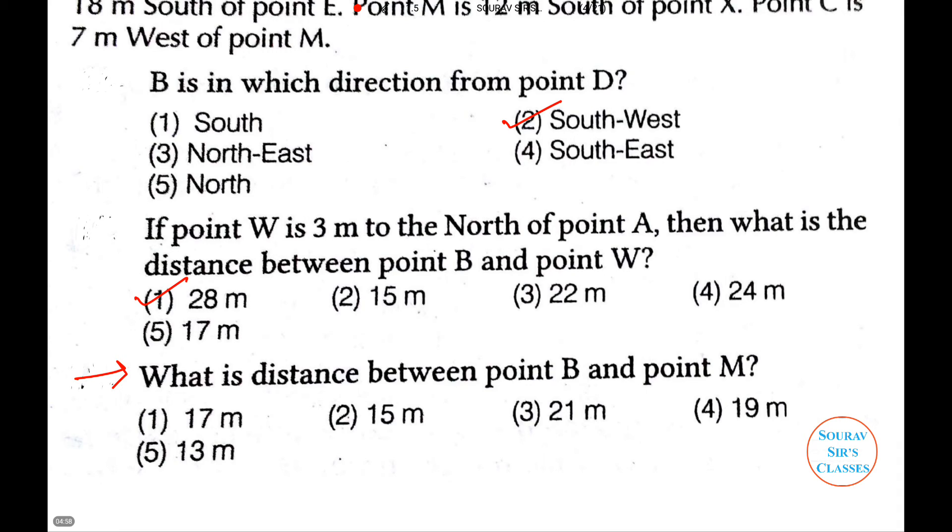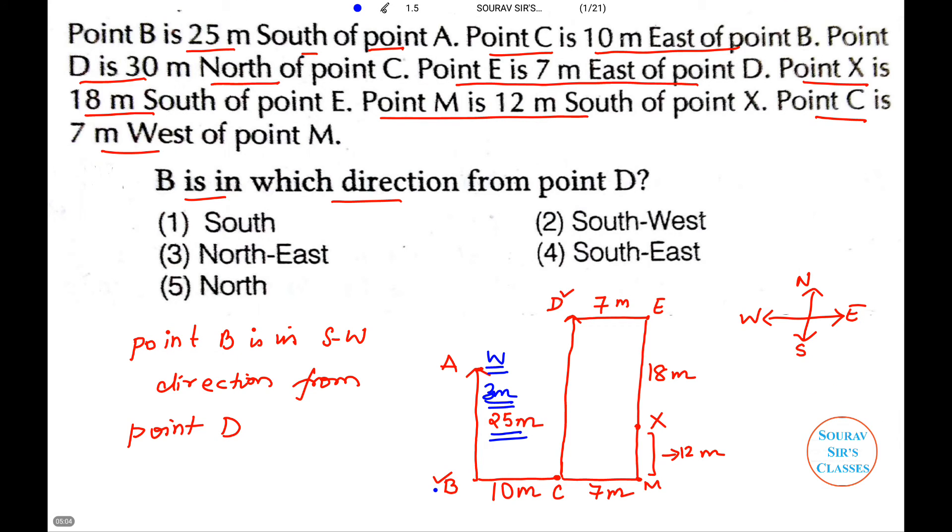The question is: what is the distance between point B and point M? So, let us look at the figure. This is B, this is M, and somewhere in between we have C. So, it is BC this length and CM this length. So, it is 10 plus 7.